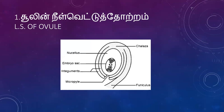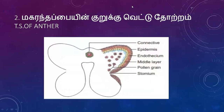So it is drawn and labelled. Then, the piece of anther — this is the Dithecus anther, this is the pollen sac. The anther has 4 wall layers.